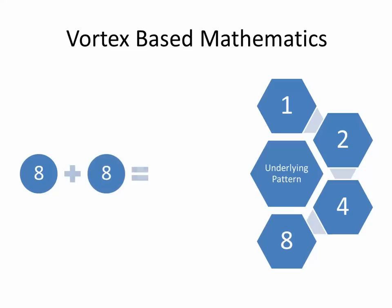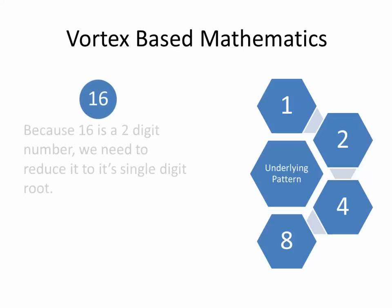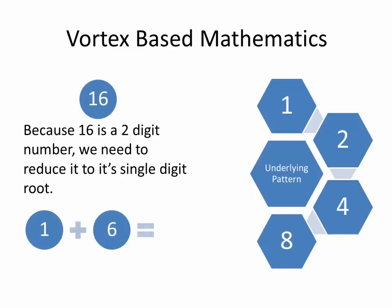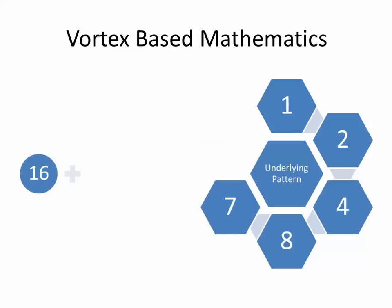8 plus 8 equals 16. But as we said, because 16 is a two-digit number, we need to reduce it to its single-digit root. 3 plus 2 equals 5. 5 is the digital root of 32.